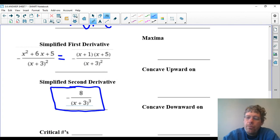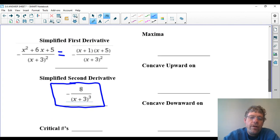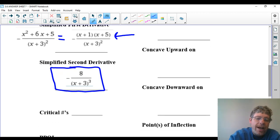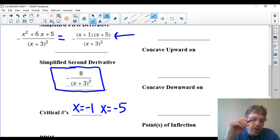I can find my critical numbers from the first derivative. Now, since it's factored, my critical numbers are where the derivative equals zero, which is where the top equals zero. And it's easy with the factoring to see that the top is zero at x equals negative one and x equals negative five. The bottom equals zero at negative three, but we already know that's a vertical asymptote, so it's not a critical number.